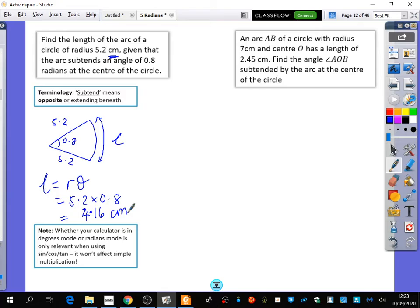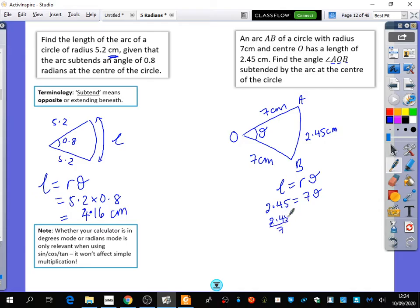Right, let's have a look at this. An arc AB of a circle with radius 7 centimeters and centre O has a length 2.45. Find the angle subtended by the arc at the centre of the circle. Again, it sounds confusing, but it's just going to be having some kind of shape like this. The arc is called AB, and the centre is O, and the radius is 7 centimeters. The arc length is 2.45 centimeters, and we want to find the angle AOB. So pretty easy. We know that length equals R theta, so we've got 2.45 equals 7 theta. So 2.45 divided by 7 is theta, which is 0.35 exactly.